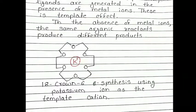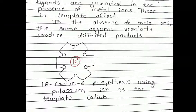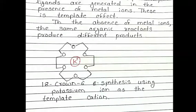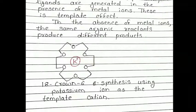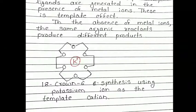For example, 18-crown-6 — this is the crown ether. It has 18 carbons and 6 oxygens, which is why it is called 18-crown-6. At the center is a potassium metal ion. So, if potassium metal ion is present, the ring forms in its presence, which we call the macrocyclic ligand. 18-crown-6 is synthesized using the potassium ion as the template cation.